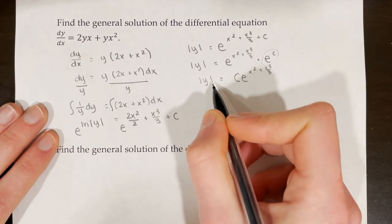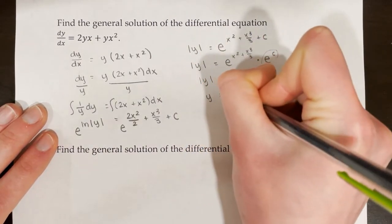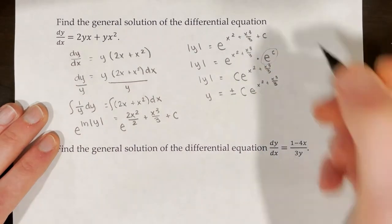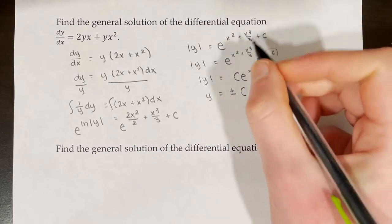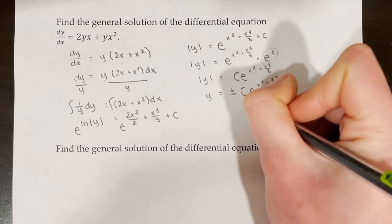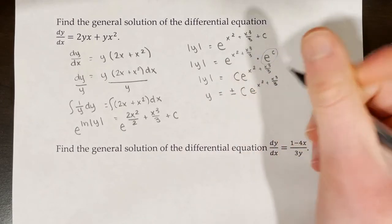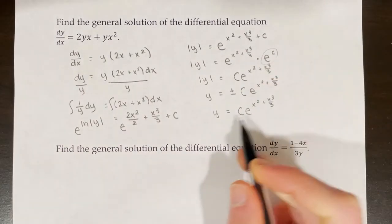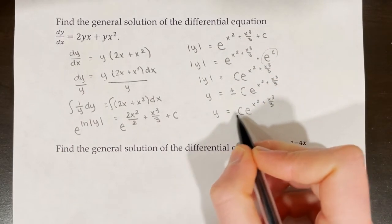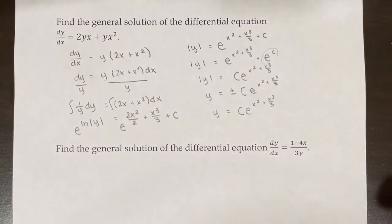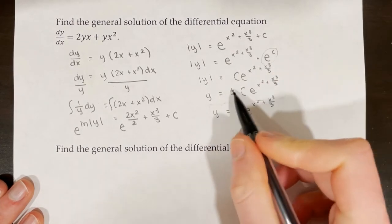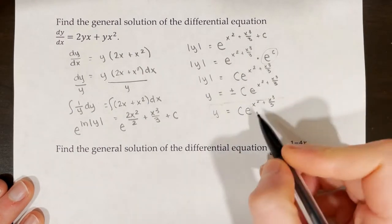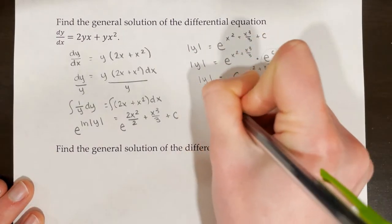To remove the absolute value bars we write y = ±c·e^(x² + x³/3). There is some debate over whether to keep the plus or minus — some will keep it, but since c is an arbitrary constant that can already represent a positive or negative number, writing y = c·e^(x² + x³/3) is also technically correct. The College Board typically just leaves it as c. How you simplify will be dictated by your answer choices.